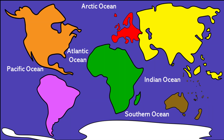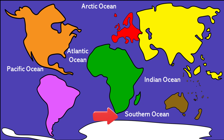There are five major oceans on Earth, and they are often divided based on their geographical locations: the Pacific Ocean, the Atlantic Ocean, the Indian Ocean, the Southern Ocean, and the Arctic Ocean.